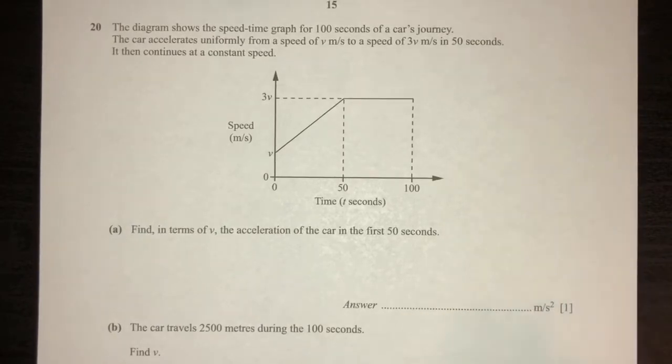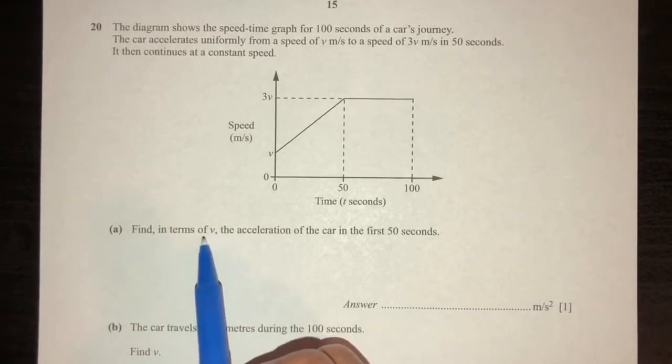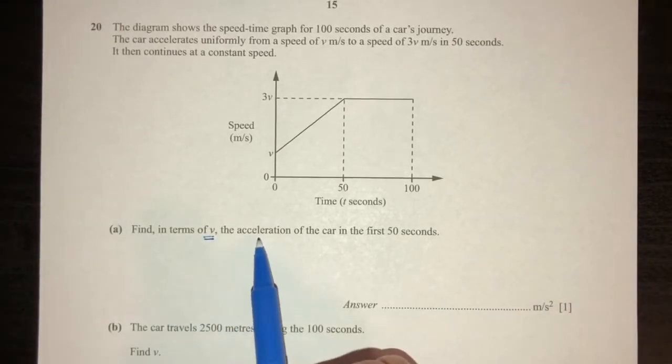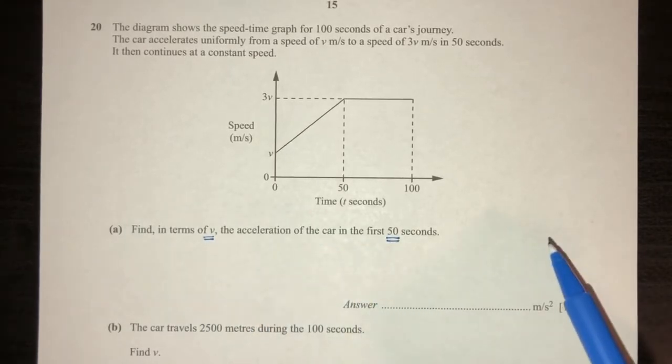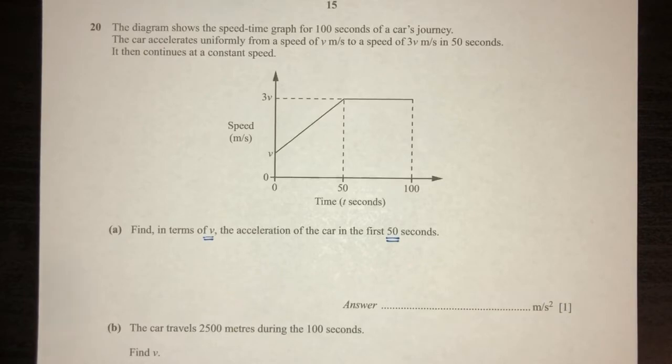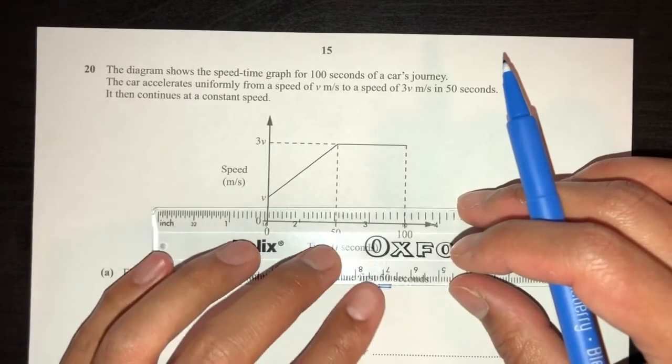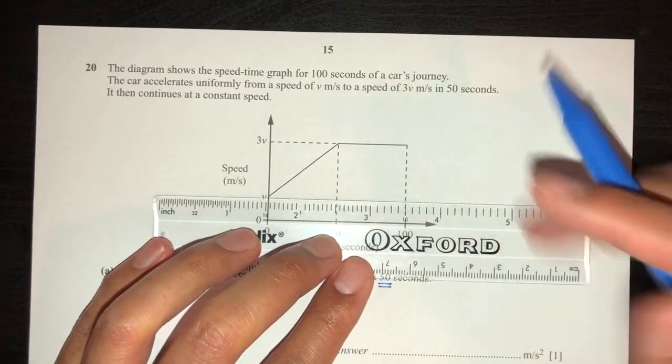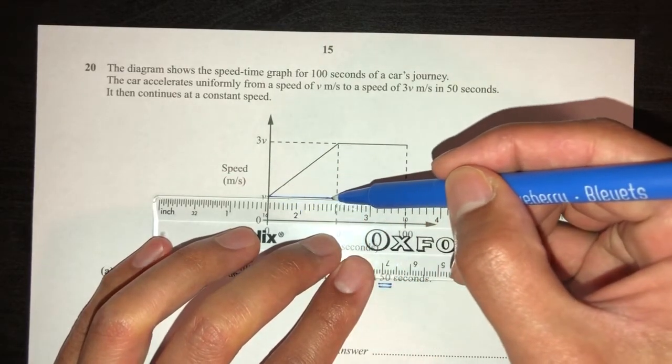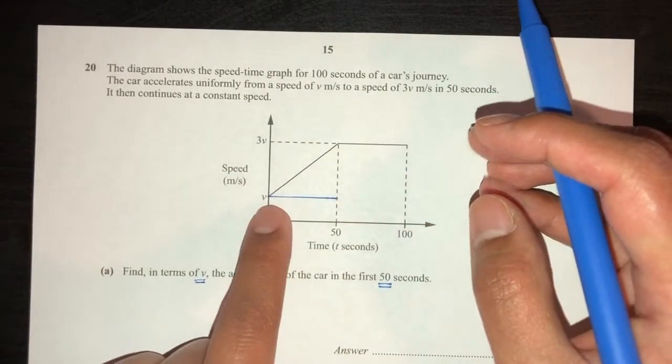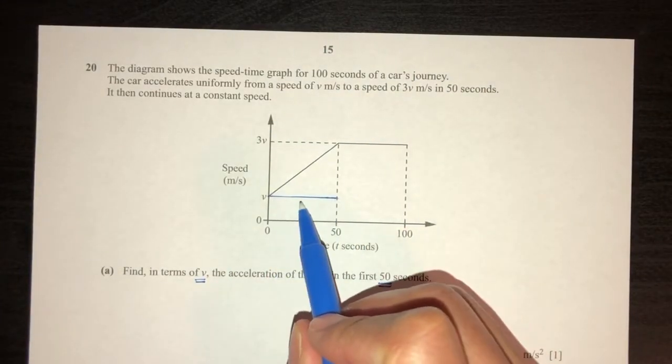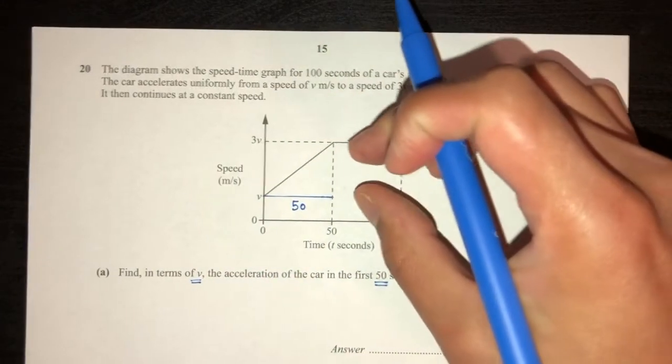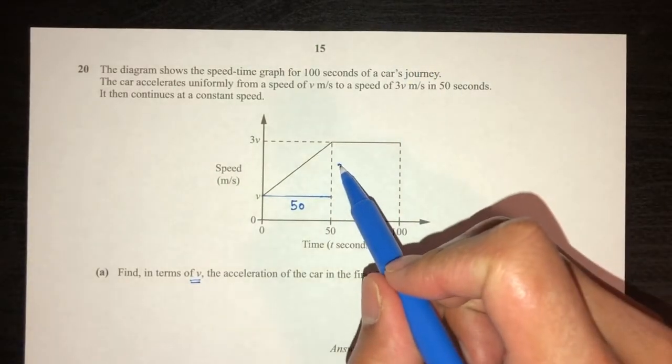Now, moving on to question part A. Find in terms of V, the acceleration of the car in the first 50 seconds. Now, if you observe, if you do this right here from V, so he began accelerating from V to 3V. Now, what is this distance? You will say this is 50, right? And what is this one? This is 2V.